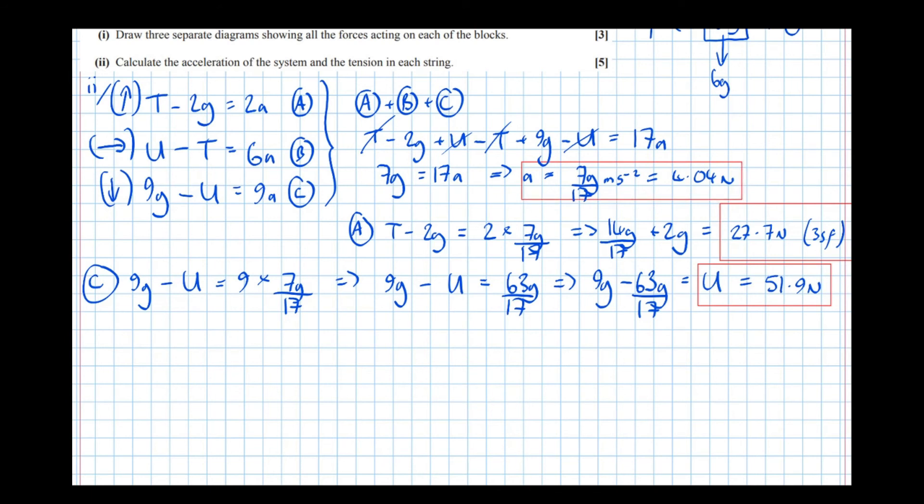And putting a box around that. However, I stand by that I did the right thing earlier not to round to 3 significant figures up until this point, because if we're going to sub this into the other equations, we want to make sure that this is correct to at least 3 significant figures. So I stand by using the 7g over 17 meters per second squared. But final answers, unless asked for an exact answer, can be rounded to 3 significant figures.